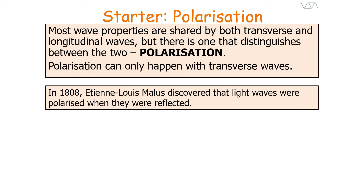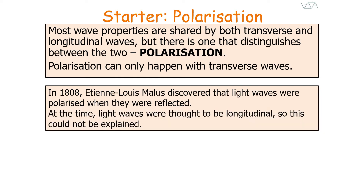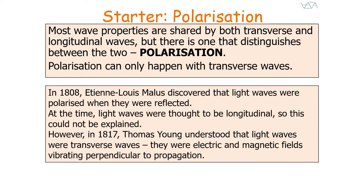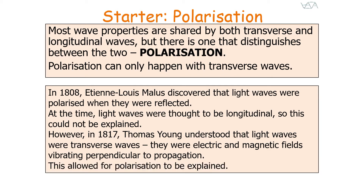In 1808, Etienne-Louis Malus discovered that light waves were polarised when they were reflected. At the time, light waves were thought to be longitudinal, so this couldn't be explained. But in 1817, Thomas Young understood that light waves were in fact transverse waves — electrical and magnetic fields vibrating perpendicular to propagation — and this allowed polarisation to be explained.